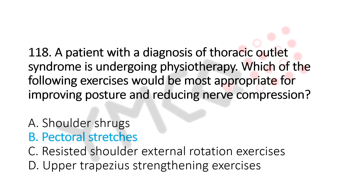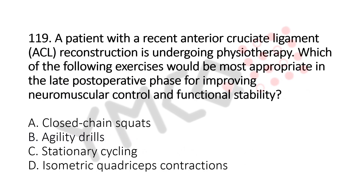Now let's move to question number 119. A patient with a recent anterior cruciate ligament reconstruction is undergoing physiotherapy. Which of the following exercises would be the most appropriate in the late post-operative phase for improving neuromuscular control and functional stability? Option A, closed chain squats. Option B, agility drills. Option C, stationary cycling. Option D, isometric quadriceps contraction. And the answer is Option B, agility drills.